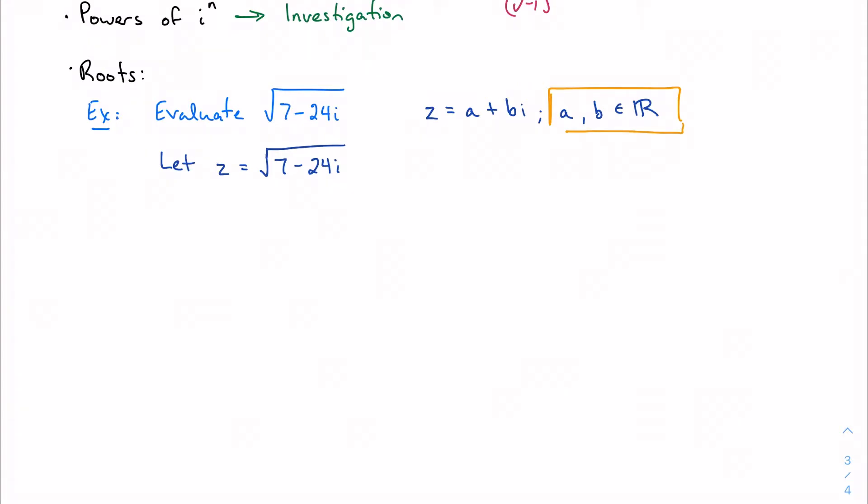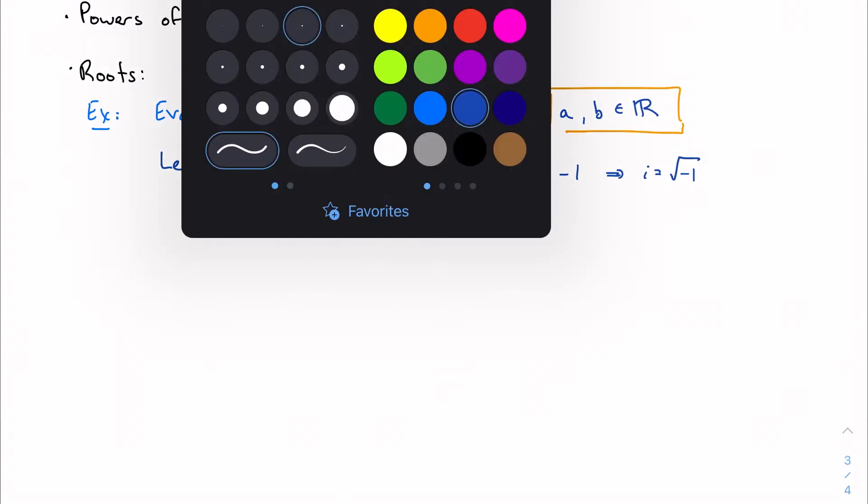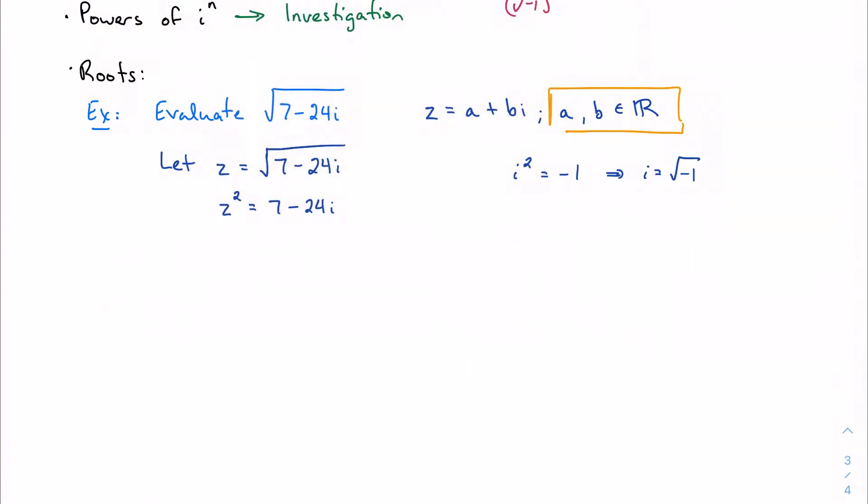What this is saying is kind of in the same vein as i squared equals negative 1, so i equals the square root of negative 1. This is saying that some number squared is going to be equal to 7 minus 24i. And this is a really important first step because it lets us see the problem in a way that we can actually maybe work with.